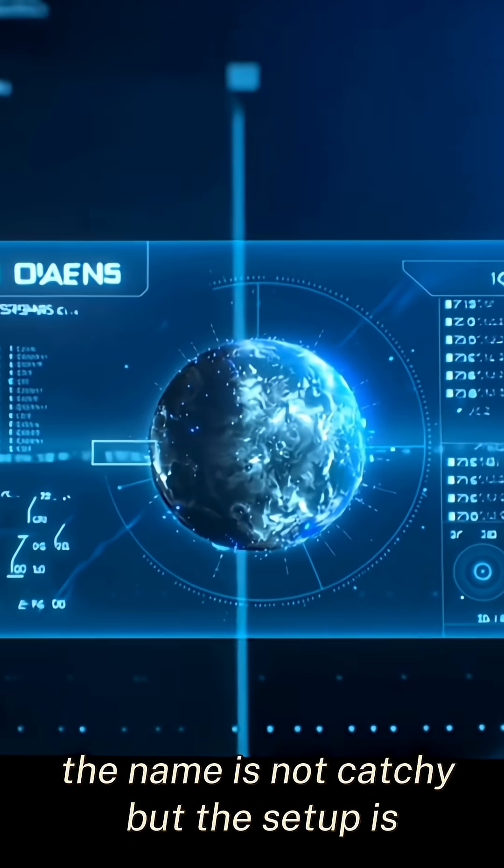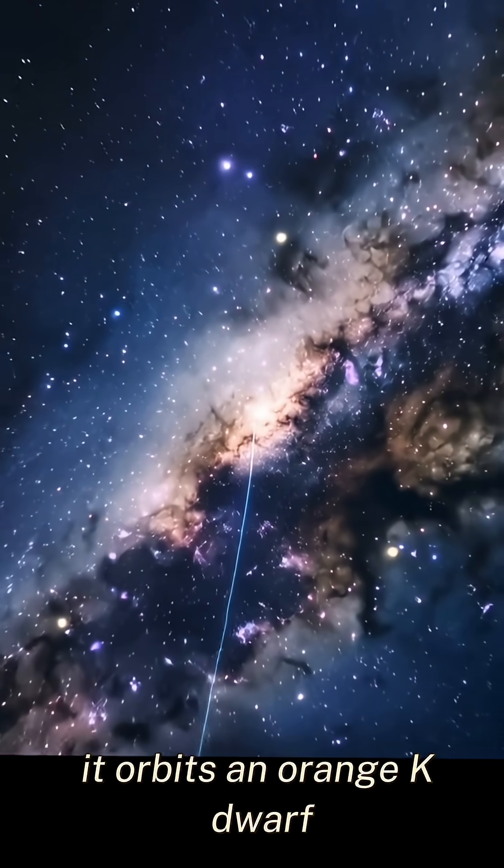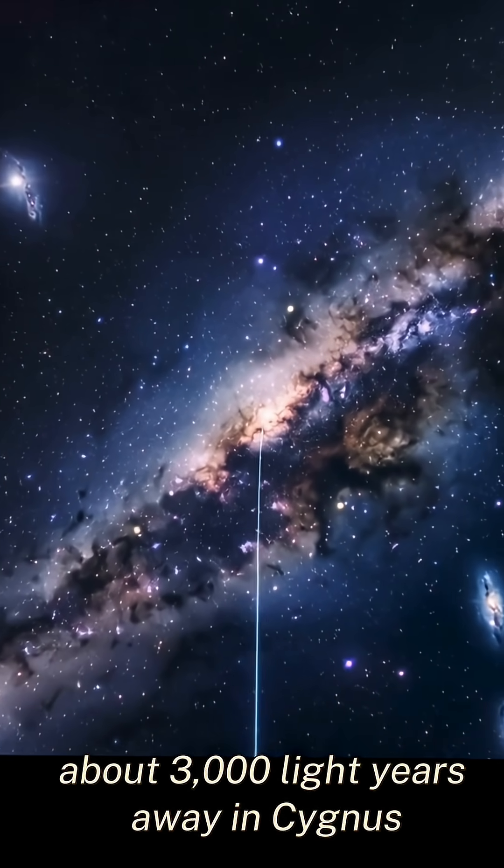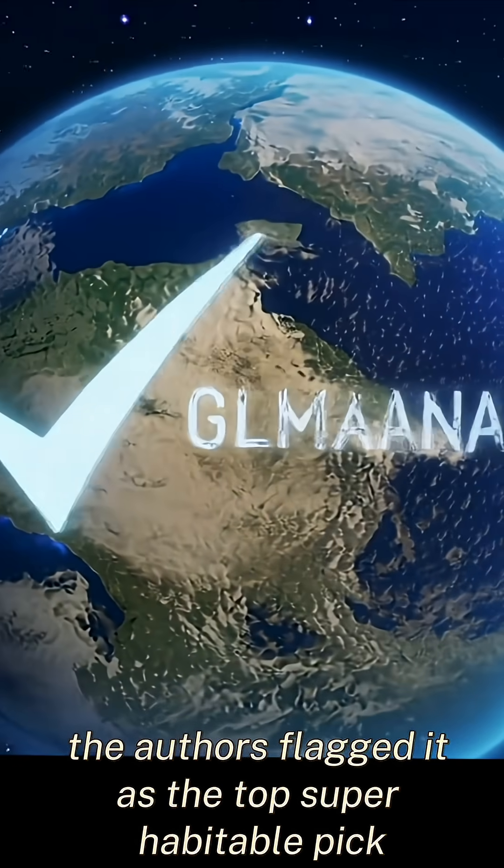The name is not catchy, but the setup is. It orbits an orange K-dwarf about 3,000 light years away in Cygnus that the authors flagged it as the top superhabitable pick.